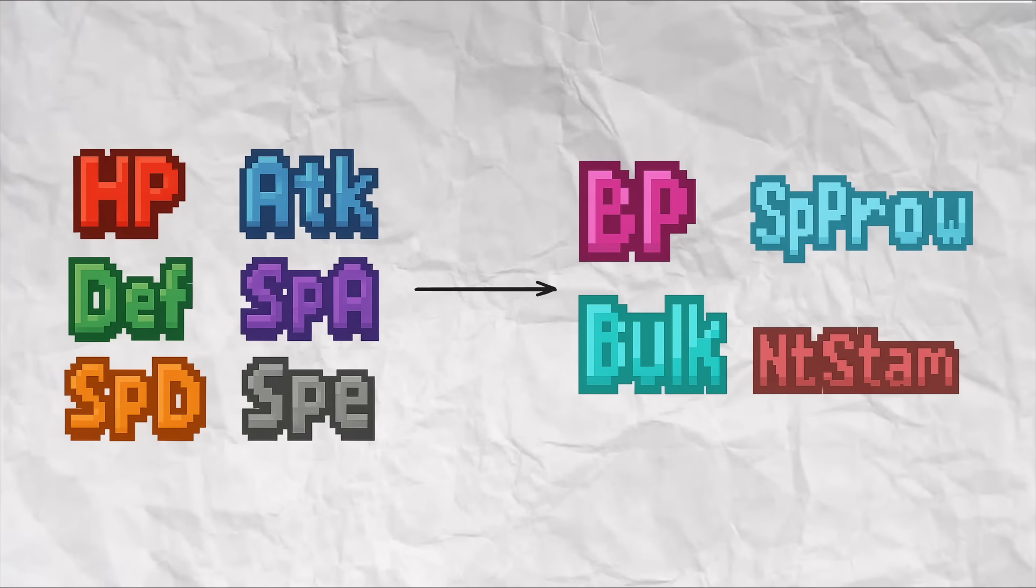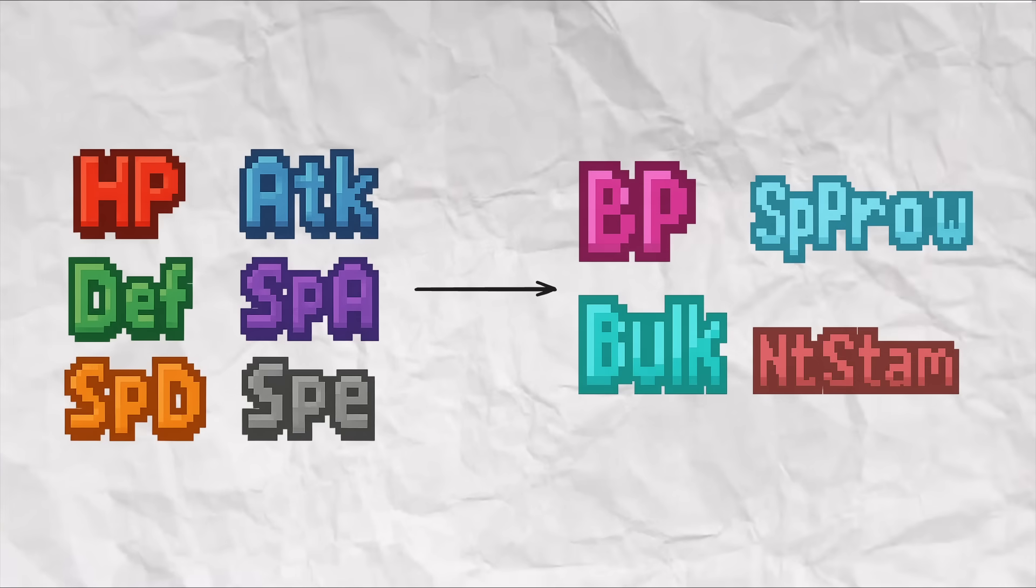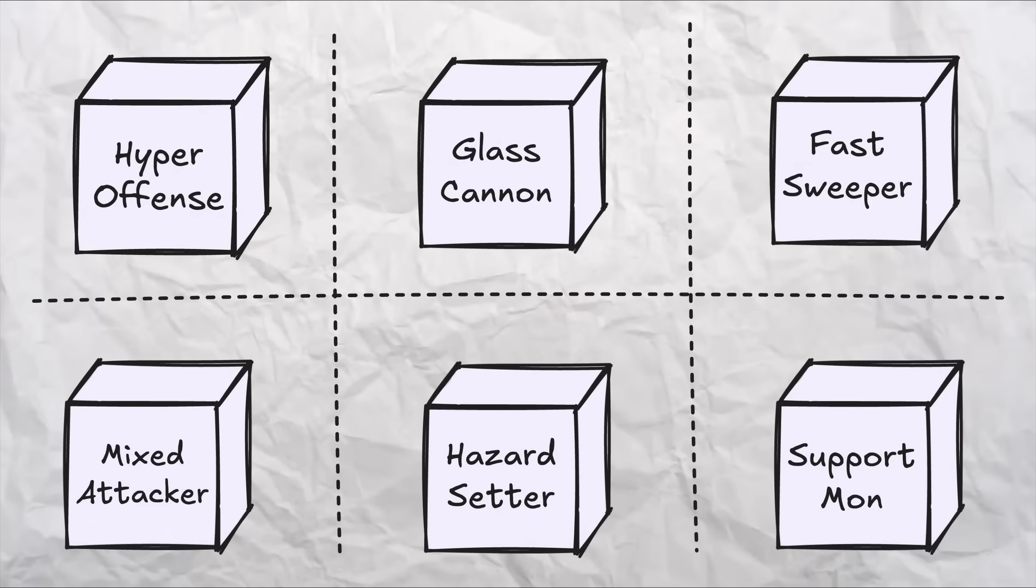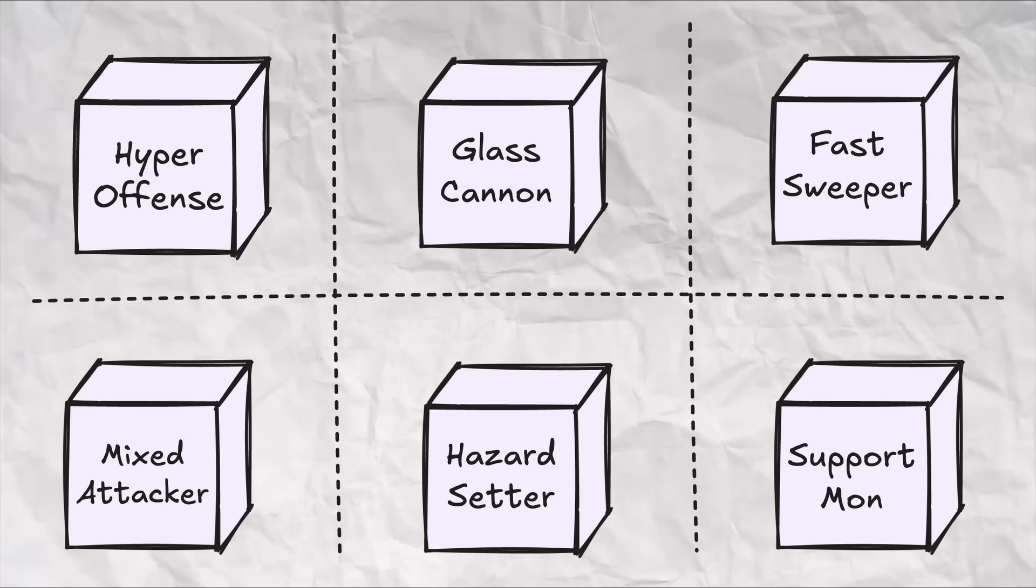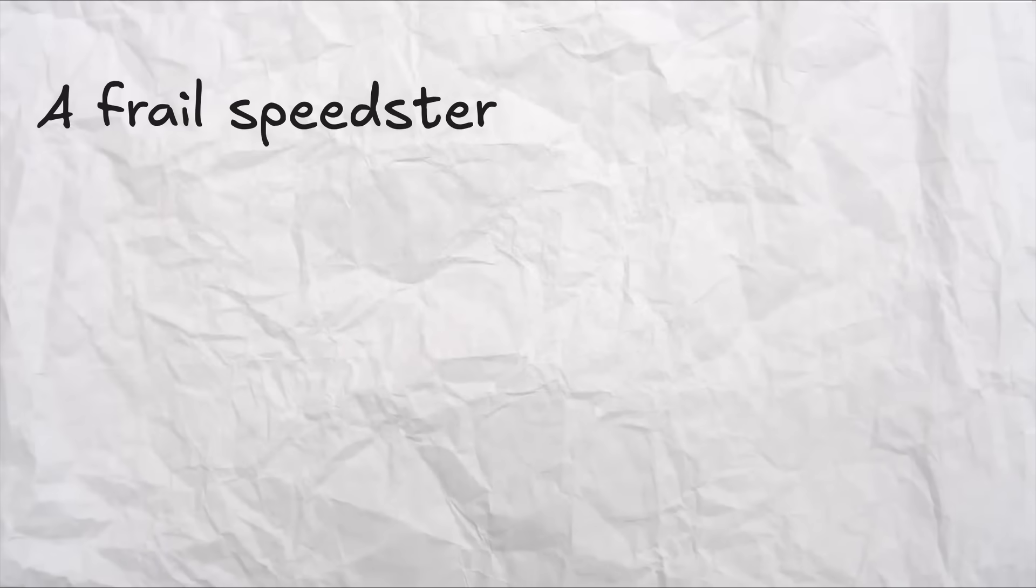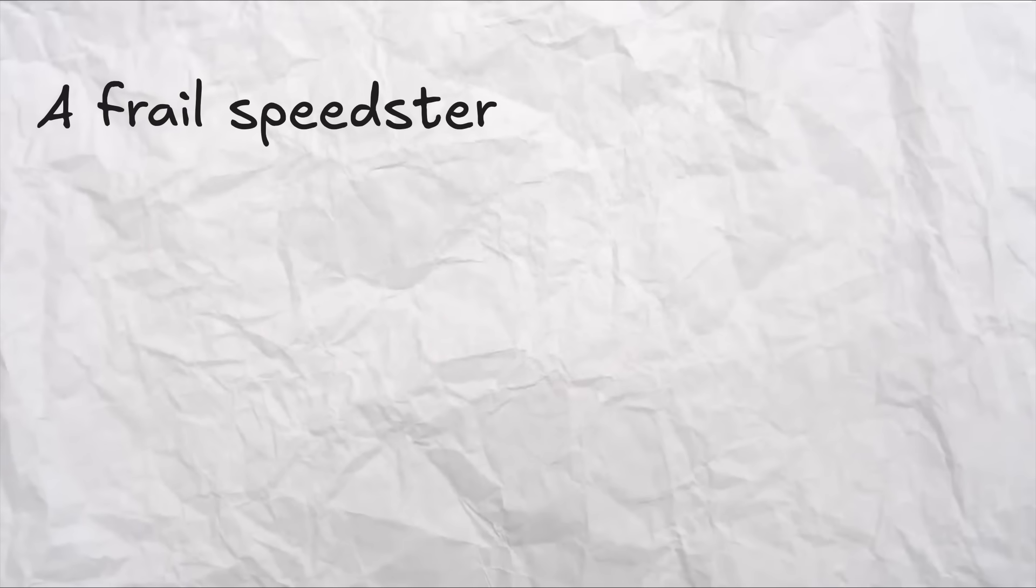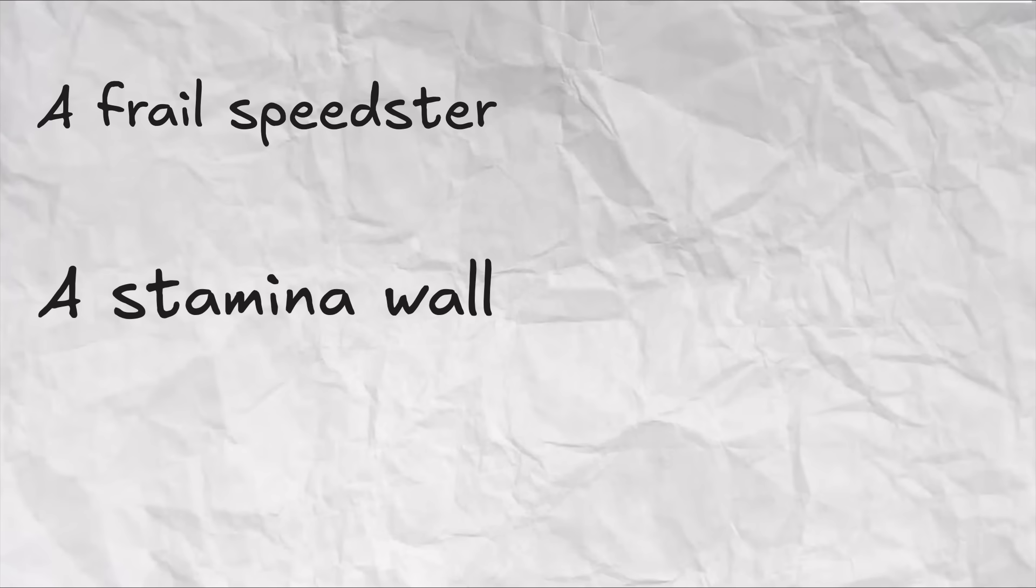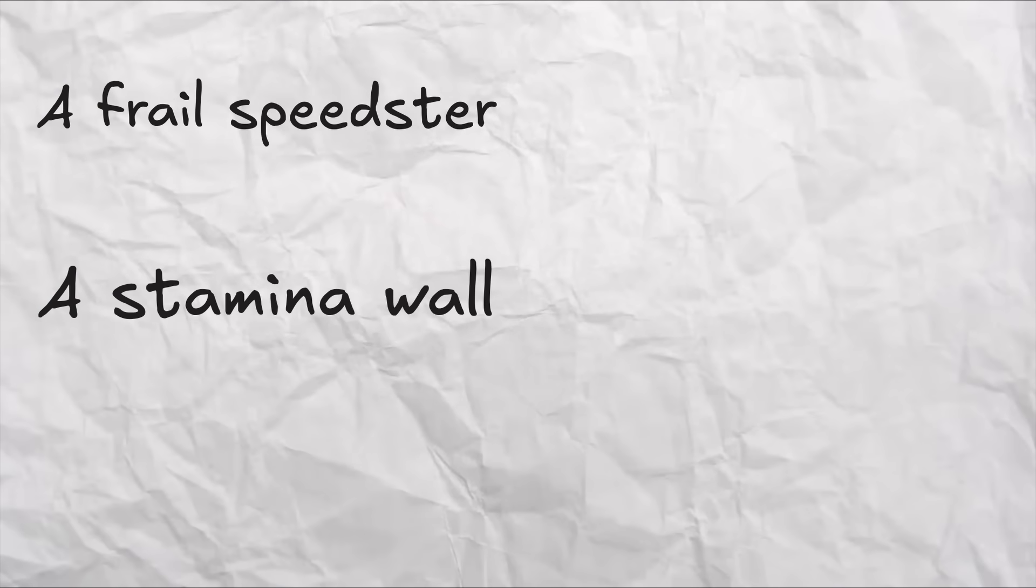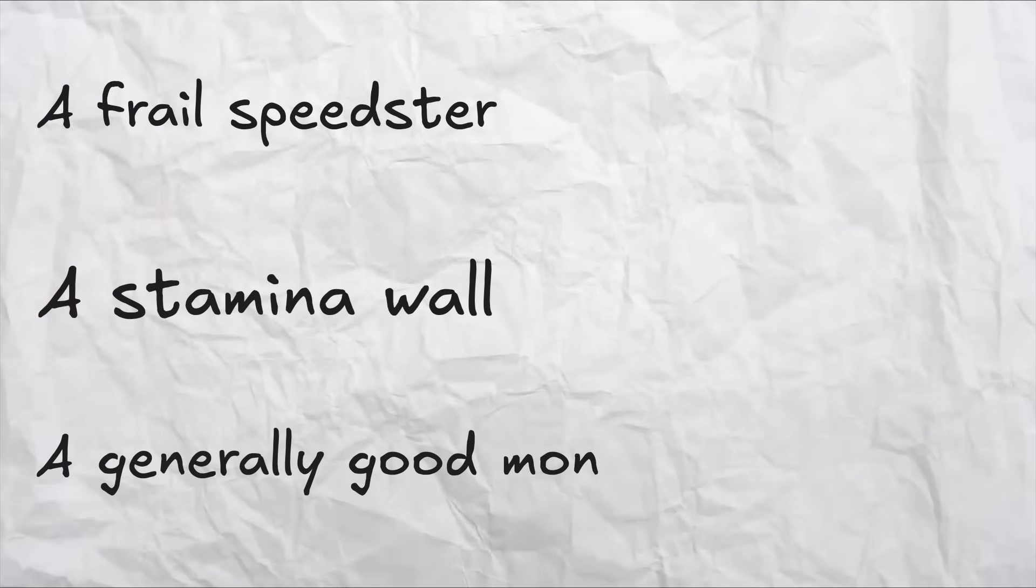One last thing I'll mention here is that these new stats are unexpectedly really helpful for some pretty basic team building. I've noticed while watching way too many Pokemon YouTube videos that when folks are team building, they usually talk in the language of these archetypes anyways, like, I want a frail attacker, or I want a slow tank on my team. These new stats let us select for those team members much more directly. For example, let's say that I'm trying to add a member to my team who is a frail speedster, since I want to be able to move first. A stamina wall, since I want some good natural bulk for longevity and to account for the lower defense from the previous requirement. And also I want just a generally good Pokemon to give myself decent odds of winning the battle.